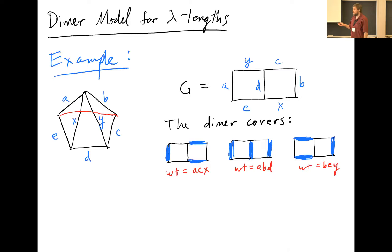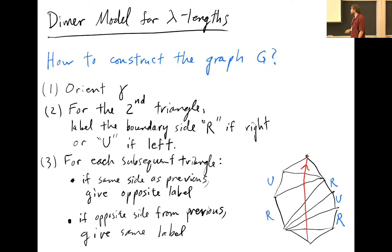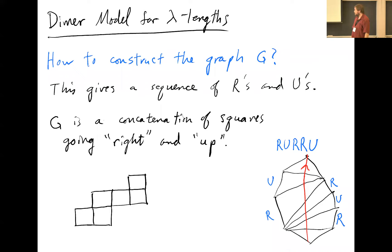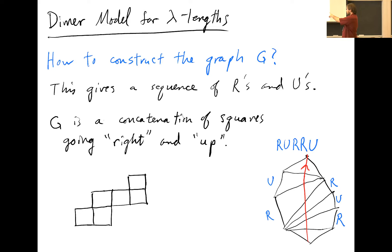You build graph G just out of squares using this word in the letters R and U, where each square is attached to the previous one either to the right or upward according to the sequence. These are called snake graphs by cluster algebra people, because the shape is like a snake. Back to the example: the graph was so simple that the word was just one letter R and that was it. The second part of the recipe is how to put the labels on the edges.